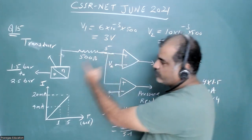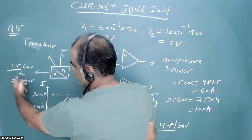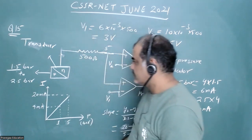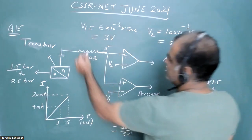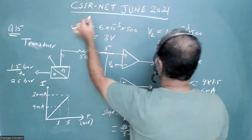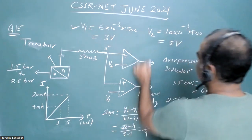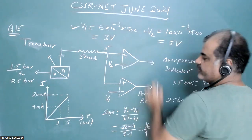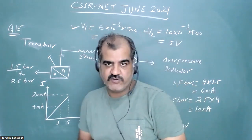In this way, by measuring the current and observing the output of the op-amp, we can control the pressure from 1.5 bar to 2.5 bar. For 1.5 bar we get voltage V1, and for 2.5 bar we get voltage V2. This is the correct option for this answer. Thank you very much.